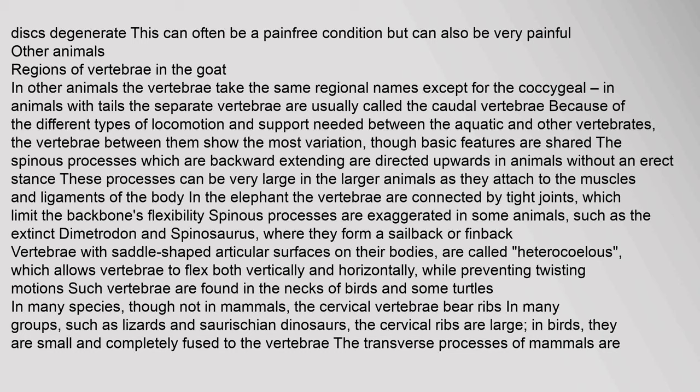In other animals, the vertebrae take the same regional names except for the coccygeal. In animals with tails, the separate vertebrae are usually called the caudal vertebrae. Because of the different types of locomotion and support needed between aquatic and other vertebrates, the vertebrae between them show the most variation, though basic features are shared. The spinous processes, which are backward-extending, are directed upwards in animals without an erect stance. These processes can be very large in larger animals as they attach to the muscles and ligaments of the body. In the elephant, the vertebrae are connected by tight joints which limit the backbone's flexibility. Spinous processes are exaggerated in some animals, such as the extinct dimetrodon and spinosaurus, where they form a sailback or finback. Vertebrae with saddle-shaped articular surfaces on their bodies are called heterocoelous, which allows vertebrae to flex both vertically and horizontally while preventing twisting motions. Such vertebrae are found in the necks of birds and some turtles.